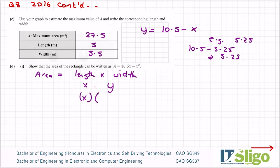So it's x times 10.5 minus x. So let's multiply that in. X by 10.5 is 10.5x, x by x is x squared. Okay, so that's how area can be written as 10.5x minus x squared.